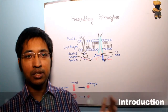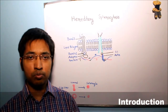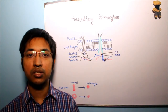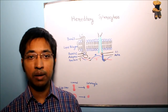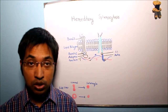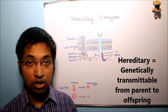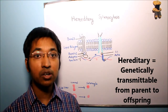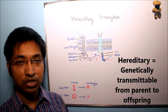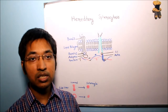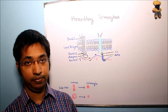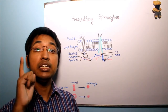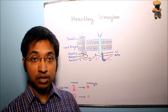First question: what do we mean by hereditary spherocytosis? Before telling you the definition, let's talk about some facts that will help us understand it. The first fact is that hereditary spherocytosis is a hereditary disorder of the red blood cell membrane — hereditary, as written in the name itself. The second fact is that this disorder is caused by intrinsic defects in the red blood cell membrane.